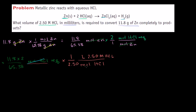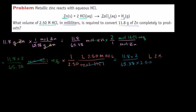So we put 1 over 2.5, and those moles cancel out. We're left with 11.8 times 2 in the numerator and 65.38 times 2.50 in the denominator, and all we're left with in our units is liters of 2.50 molar HCl solution required.